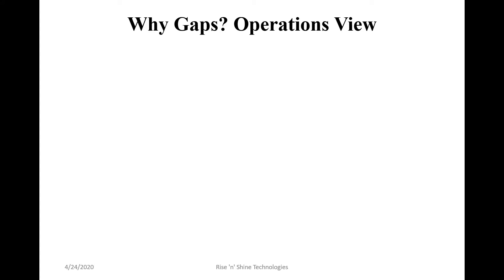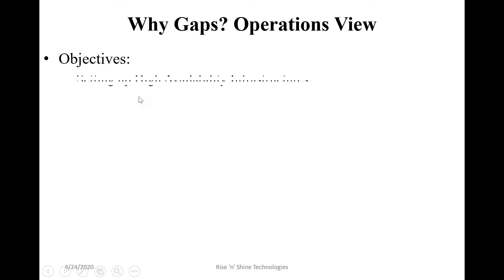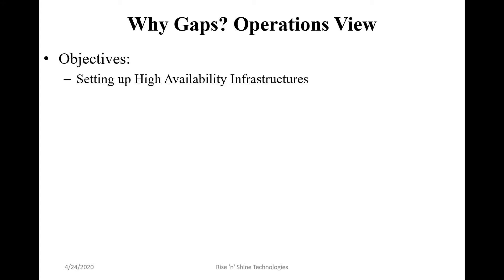The second important team is operation teams. What is the operation team's role? Their objective is to take the application given by the development team and plan it in a higher-built environment. The application is launched to end users — we don't know if it will be one million or one thousand users accessing it.